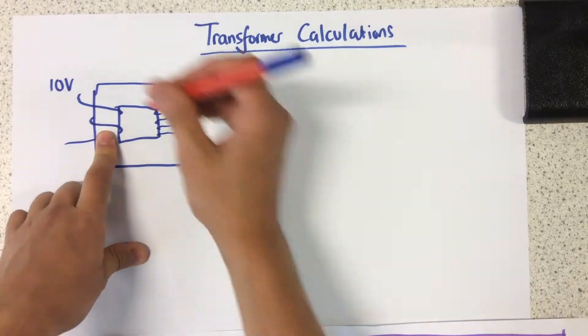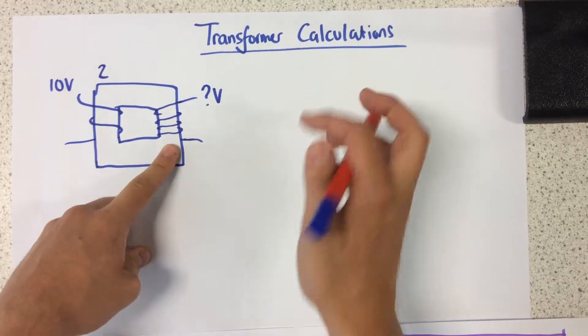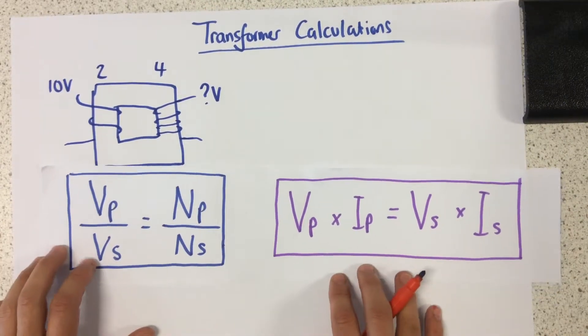So if we have a look at this, we've got two turns here on our primary coil and we have one, two, three, four on our secondary. So first of all, we're going to look at which equation to use.